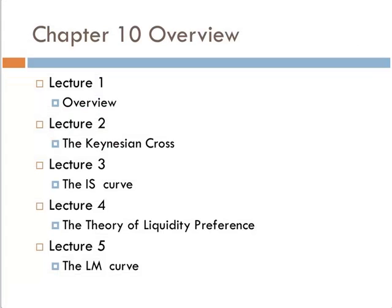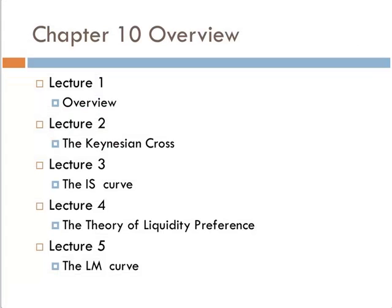So this is Lecture 1, and we're going to have an overview. First, we want to talk about the Keynesian cross. Then from the Keynesian cross, we'll derive the IS curve. Then we'll talk about the liquidity preference theory, and from liquidity preference theory, we'll develop the LM curve.